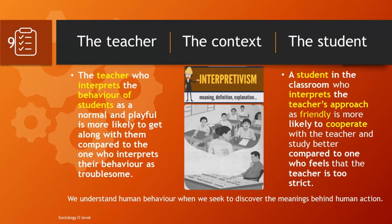The context, the behaviour of the people, the attitude of the people, what they think and how they behave in that context changes, just because of the way in which they interpret each other's behaviour. This is why we want to understand why teachers behave in a particular way and why students behave differently in different classes with different teachers. We can only understand all this if we seek to discover the meanings that each one is attaching to the behaviour of the other. And this is what interpretive sociologists try to do.